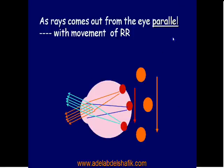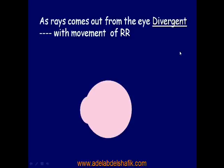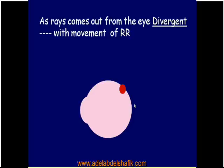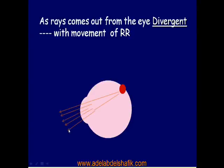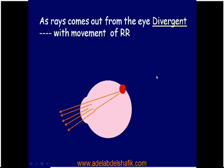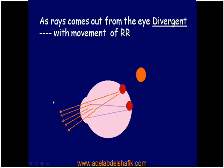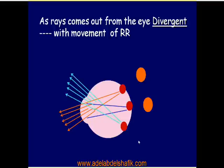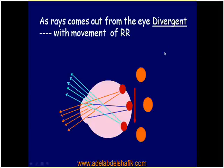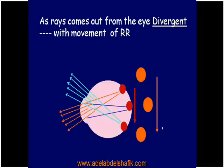This is the situation for parallel rays and also for divergent rays coming out of the eye — both give with movement of the red reflex. The observer notices the direction of rays and projects them back, and the red reflex moves in the same direction as the mirror movement — they move hand in hand.